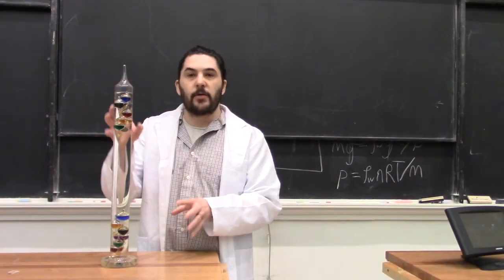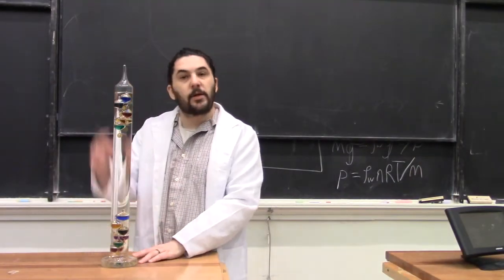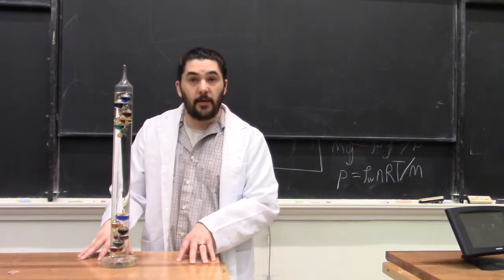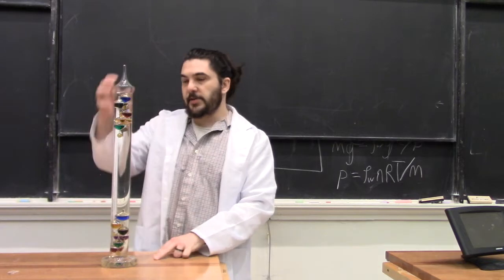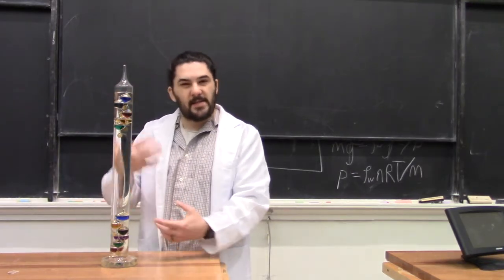Here we have a Galileo thermometer. It's filled with a clear fluid that expands as it gets hotter, which means its density is temperature dependent. Inside it are a series of bulbs, and each bulb has a slightly different density.